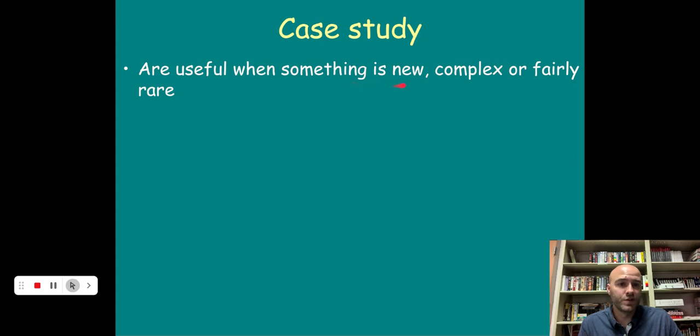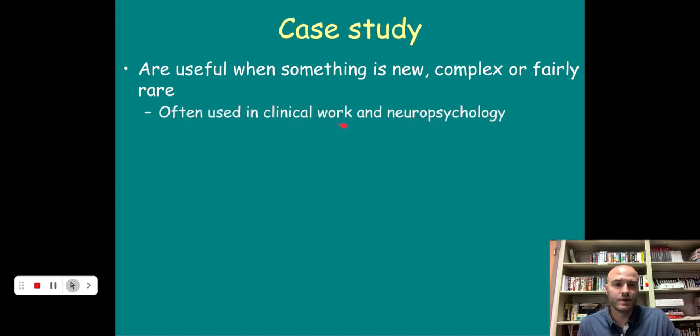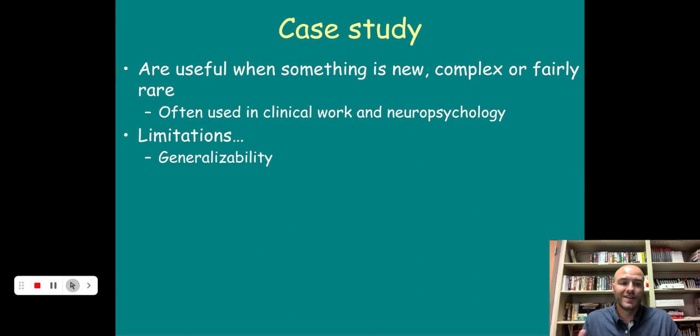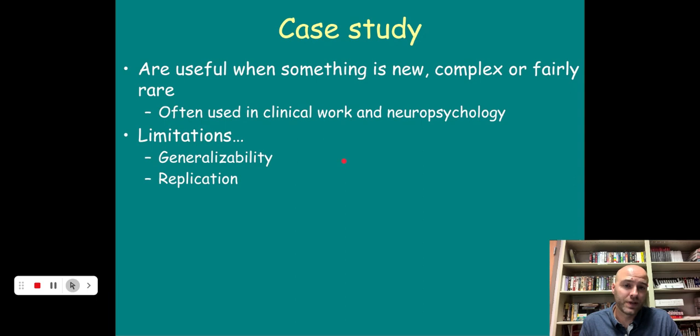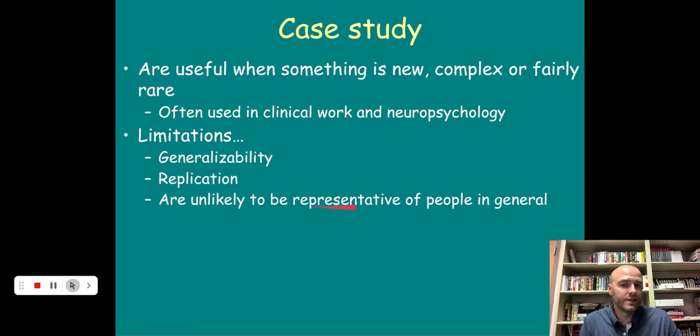These are super useful when something is new, complex, or fairly rare. You want to dive deeply into something and get a lot of specific information about something that's new, something that's complex that we need to understand better, or something that's rare and we don't have a chance to study it very often. It's often used in clinical work, in hospitals, and in neuropsychology to better understand the brain. There are some limitations to case studies. Generalizability. If you're only looking at one specific person or a group of people, you cannot then take that and apply it to the larger population because you don't have a representative sample. And it's tough to replicate because if things are new, complex, or fairly rare, you're not going to have the opportunity to replicate them like you would other studies.